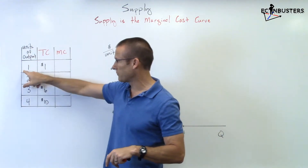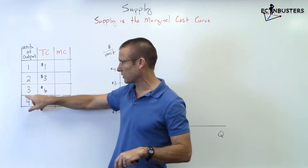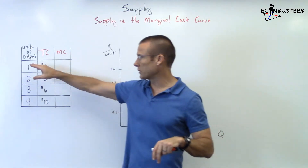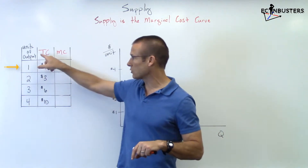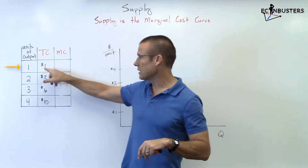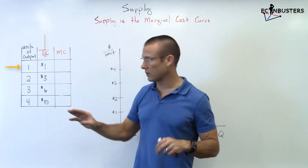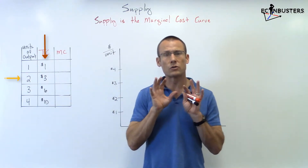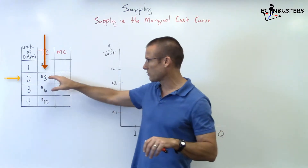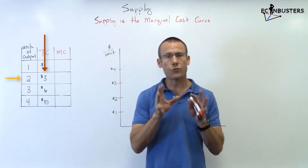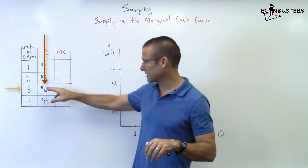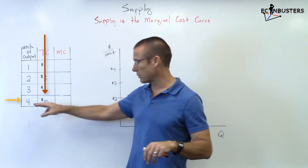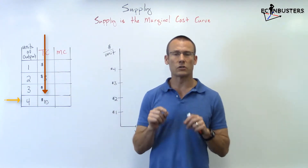Take a look at this table. We've got units of output: first, second, third, fourth. If we make only one unit of output, our total cost is $1. To make two units of output, total cost is $3. Three units of output, $6. Four units of output, our total cost is $10.